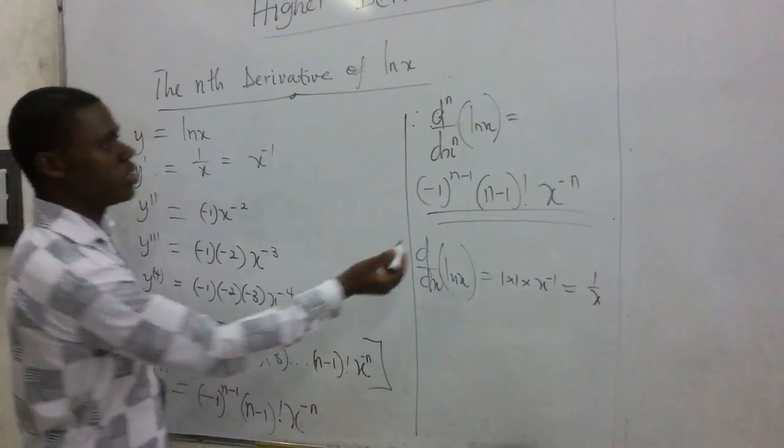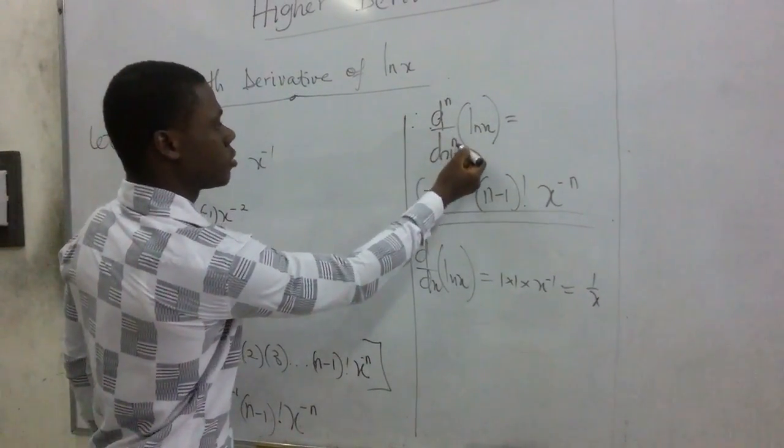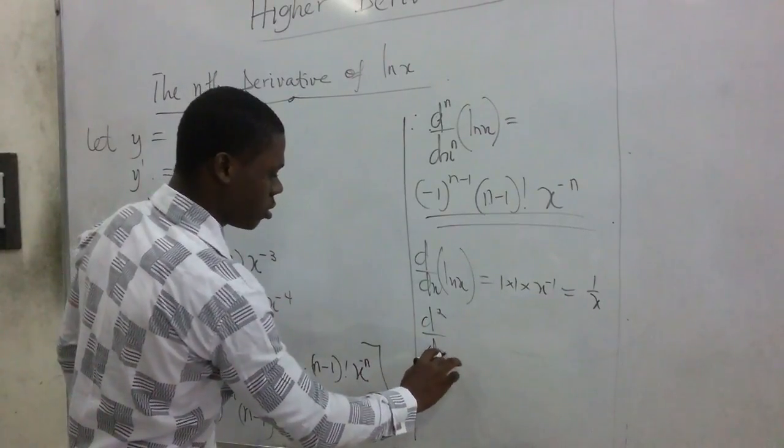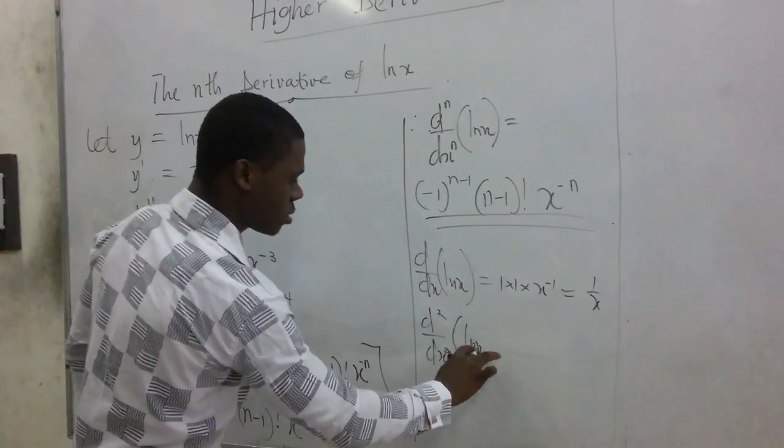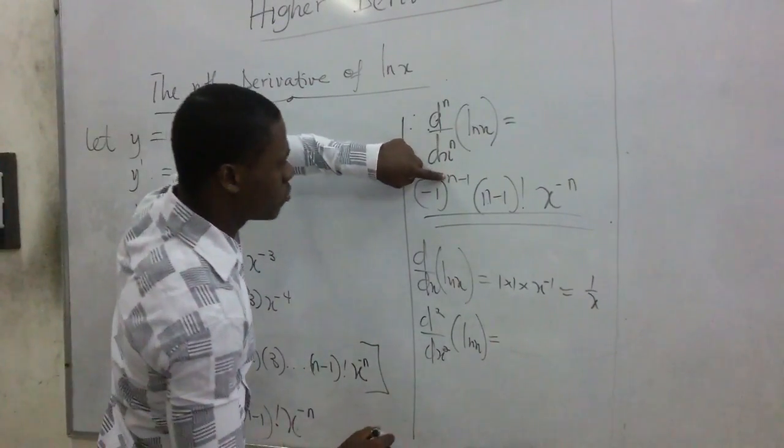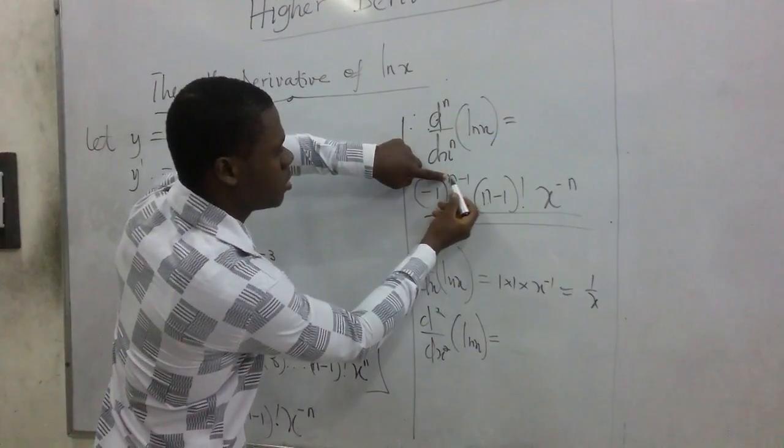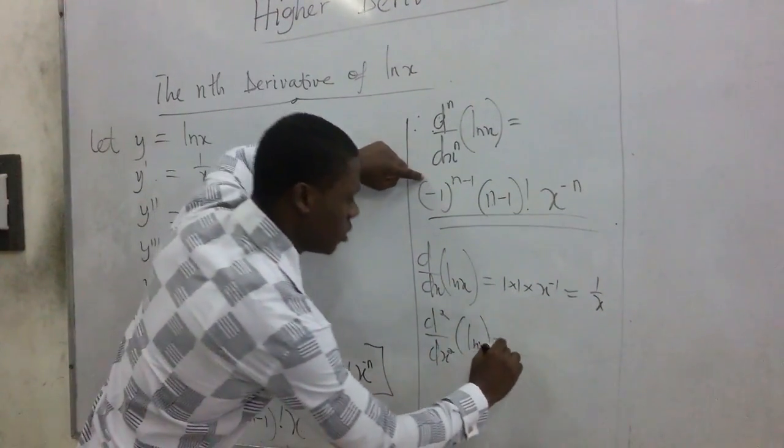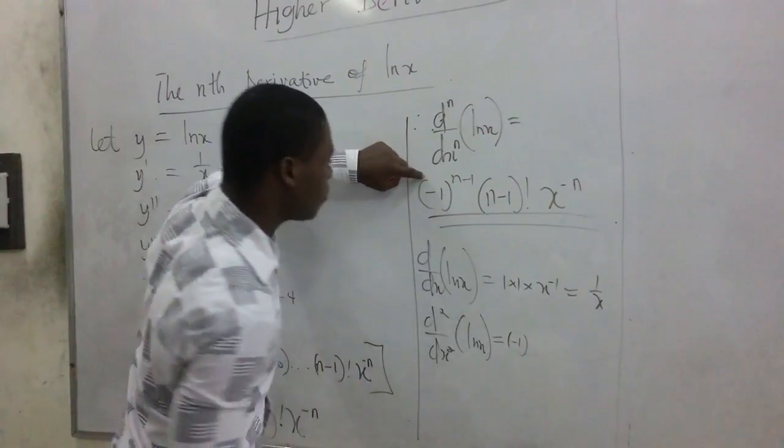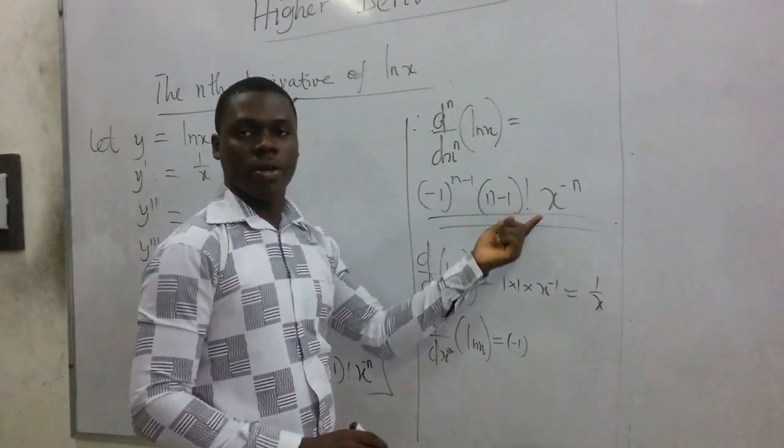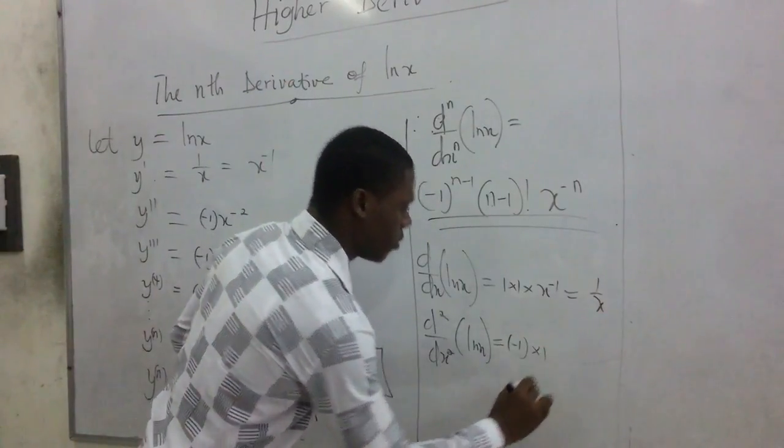When we look at the second derivative, it means just putting 2 here. So second derivative of ln(x) gives us, so quickly, we don't have to struggle, just put 2 here. Putting 2 here means that this place becomes 2. So we have negative 1 raised to power 1, giving us negative 1. So we can work it out. So we have 1 factorial is 1. So multiply by 1.